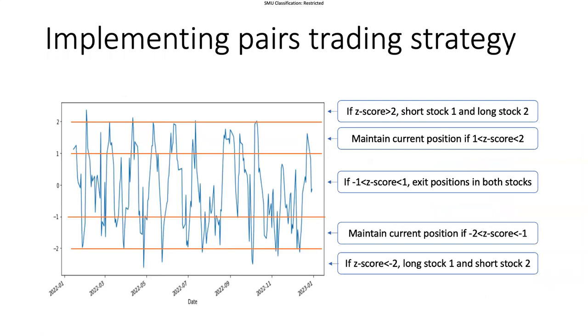Let's talk about how to implement the pairs trading strategy. Here we have the z-scores after standardizing the spread. We can set one threshold at two. Two means it is above two standard deviations from the mean. If the z-score is above two, then we're going to short stock one and long stock two, because we know the difference is so high. Since the spread is stock one minus stock two and the difference is more than two, then stock one will go down in price in the long run, so we short it.